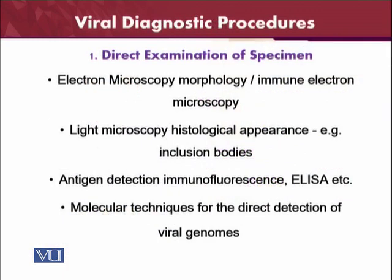First is direct examination of the specimen. From direct examination, you can see whether there is a problem, and you can assume whether this is a bacteria, virus, or parasite on the basis of clinical signs and symptoms. You can speculate about what kind of disease it is. Direct examination can also be done with an electron microscope, and on the basis of morphology or immune electron microscopy, you can determine the diagnosis of the virus.